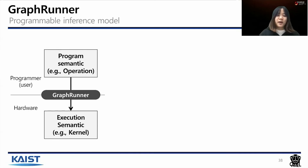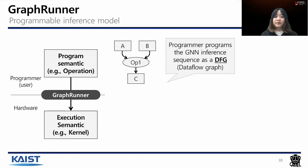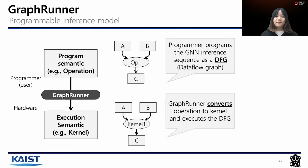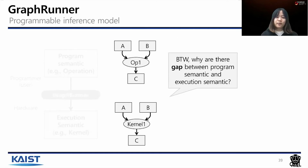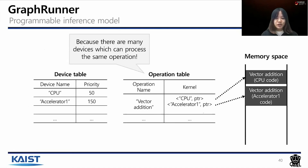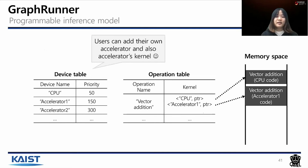Graph learner is a programmable inference model that converts program semantic to execution semantic. The programmer programs a GNN inference sequence as a data flow graph, while graph learner executes the data flow graph by converting each operation to a kernel. There are gaps between program semantic and execution semantic because there are many devices in the Holistic GNN hardware that can process the same operation. For example, vector addition can be executed on a CPU or an accelerator. Users can also add their own customized accelerator and their accelerator's hardware code.